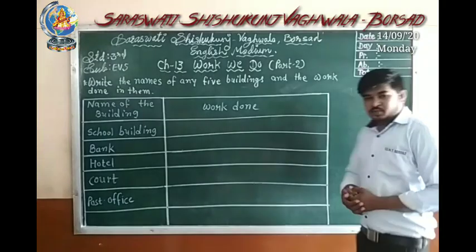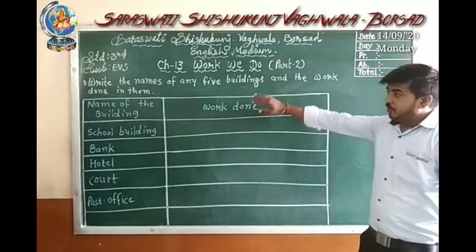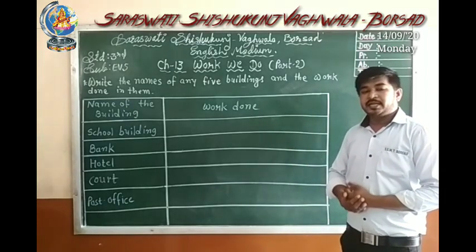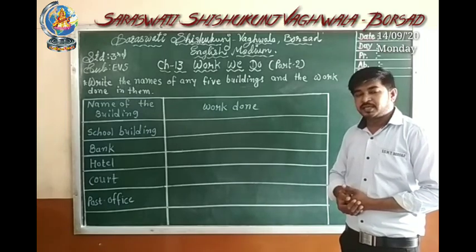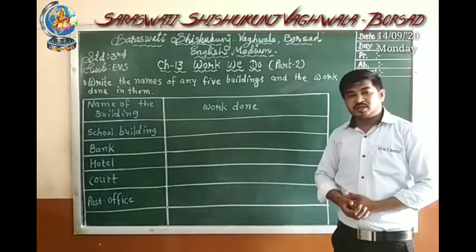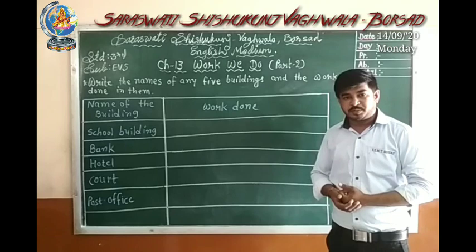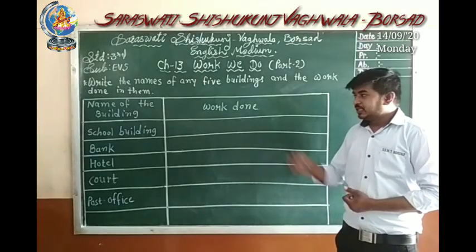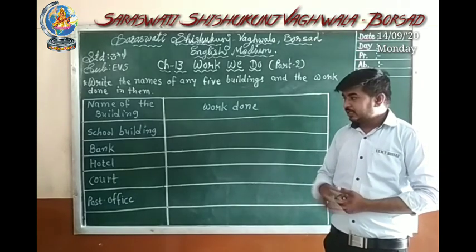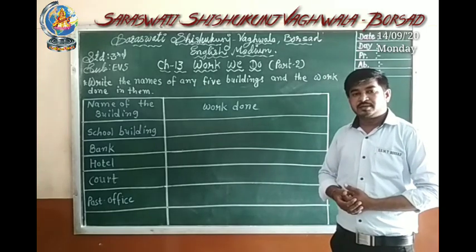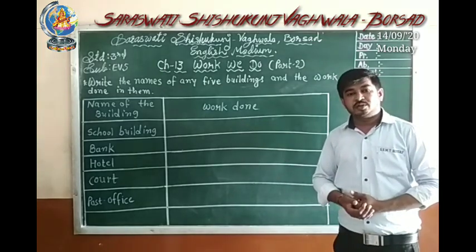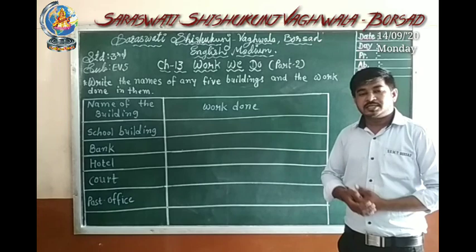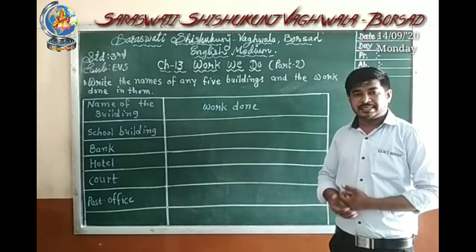Let's go to the next exercise. Write the names of any five buildings and the work done in each. In this exercise, we have to write any five buildings and describe which work is going on in each building. For example, hospital is given - the work done in hospital is treatment of ill or sick people, vaccination for children, and giving medicine to the sick.